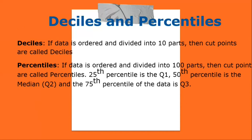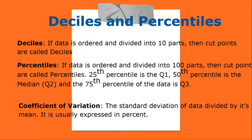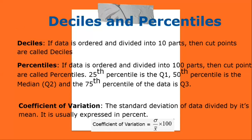Coefficient of variation: the standard deviation of data divided by its mean, usually expressed as a percent. The coefficient of variation is the ratio of standard deviation to mean, multiplied by 100, and is measured in percentage.